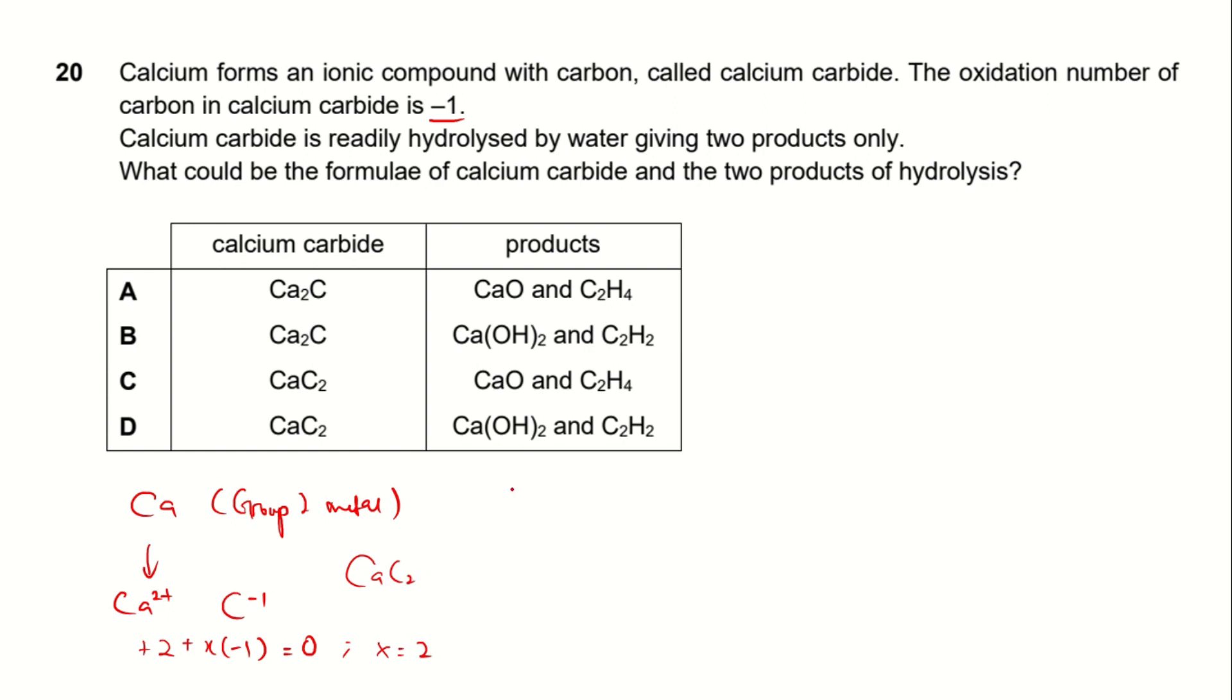You can simply use the crossing method. You will still get the same formula of the compound which is CaC2. So that rules out A and B.